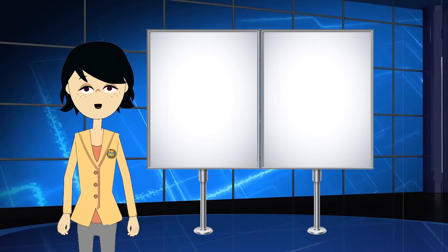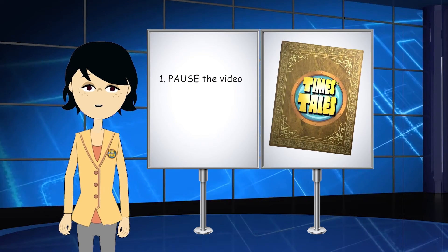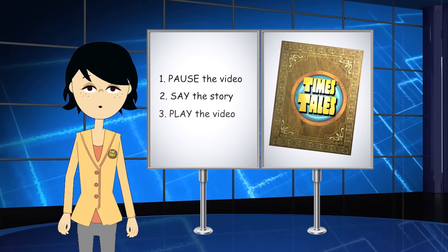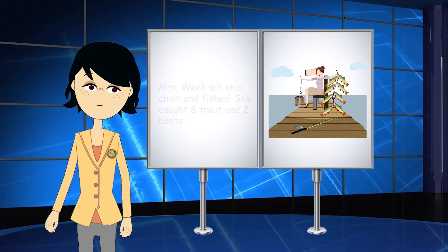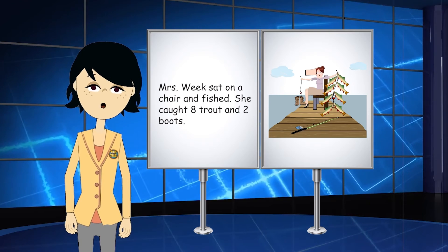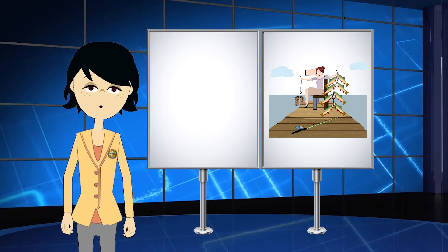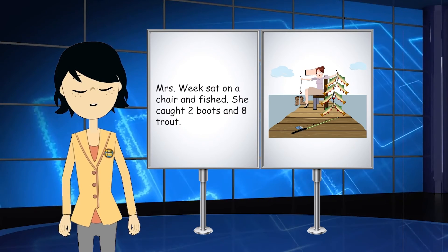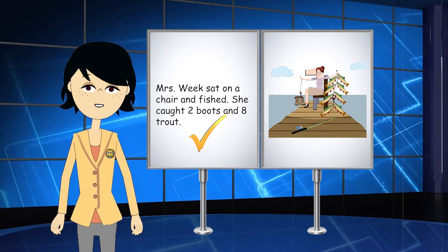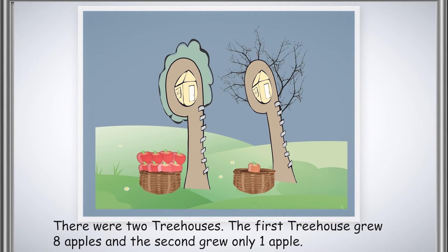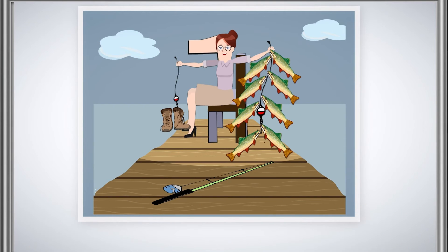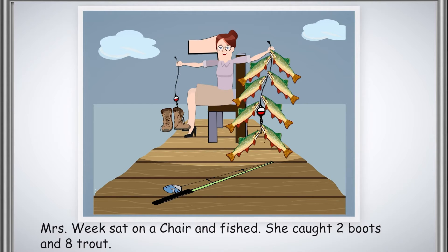Now it's your turn to tell the story. When you hear this sound, pause the video and say the story out loud, then hit play and see if you got it right. It's very important that you say the story in the proper order. Here's an example of the wrong way to say the story: 'Mrs. Week sat on a chair and fished. She got eight trout and two boots.' And here's how you say the story the correct way: 'Mrs. Week sat on a chair and fished. She got two boots and eight trout.' There were two treehouses. The first treehouse grew eight apples and the second grew only one apple. Mrs. Week sat on a chair and fished. She got two boots and eight trout.